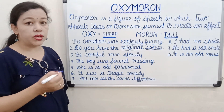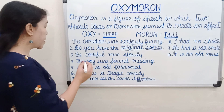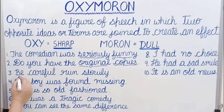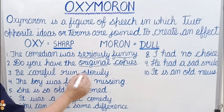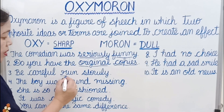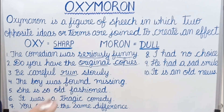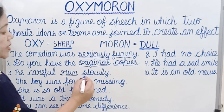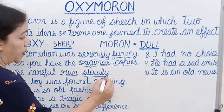Next sentence: 'Be careful, run slowly.' Now here, if you are running you are already fast, and the next word is slowly. Both are opposite words coming together in a sentence, so it is an oxymoron.